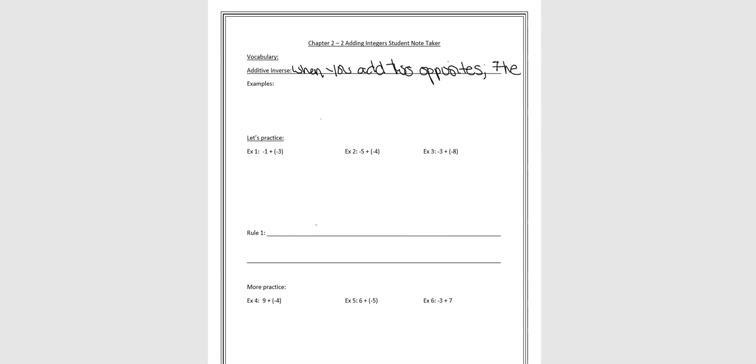That is going to be our first vocabulary word. You can see here: additive inverse. Let's write down the definition. An additive inverse is when you add two opposites, the sum is 0.